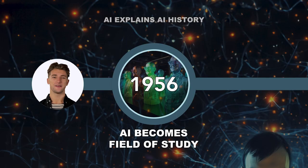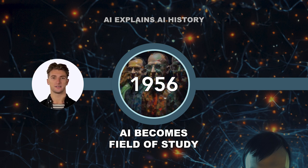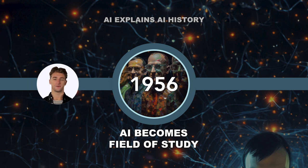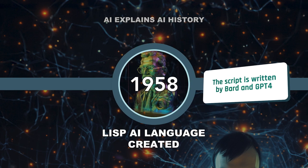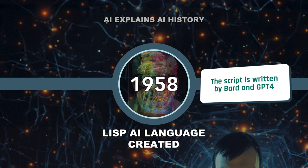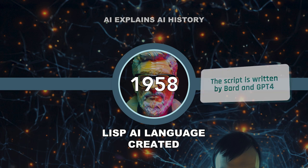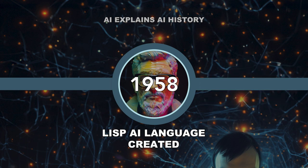In 1956, the Dartmouth Conference marked the birth of AI as a field of study. At this event, scholars proposed that machines would one day simulate the tasks we do in our everyday lives and that the field of AI should be prioritized for future generations. Two years later, in 1958, computer scientist John McCarthy developed Lisp, the dominant AI programming language, for the next three decades.